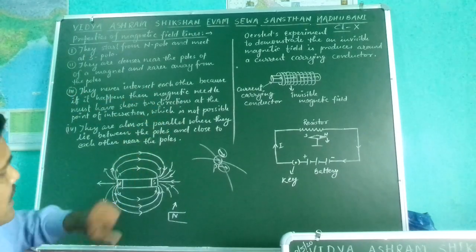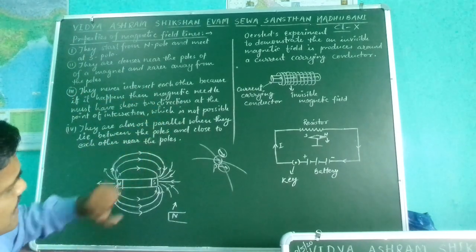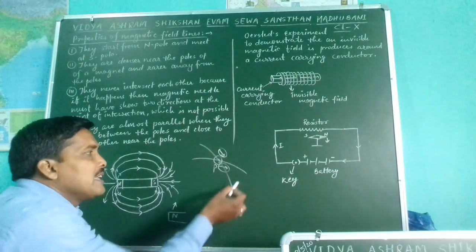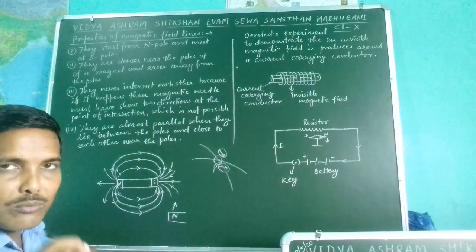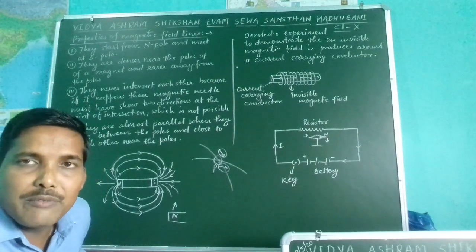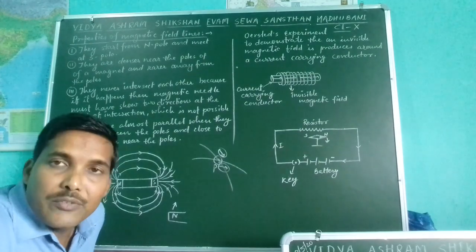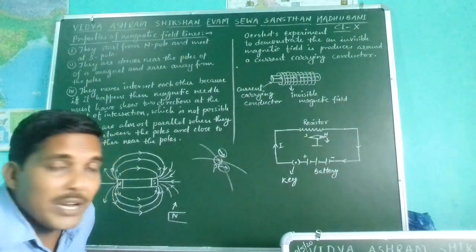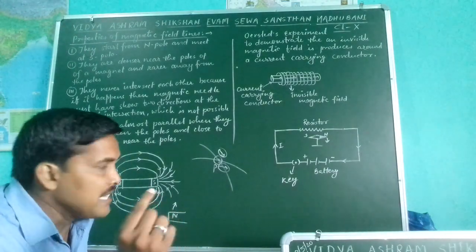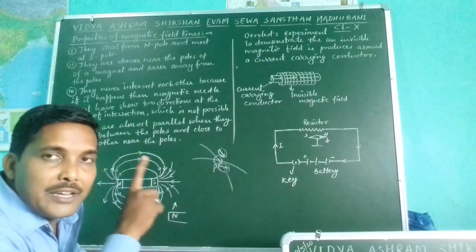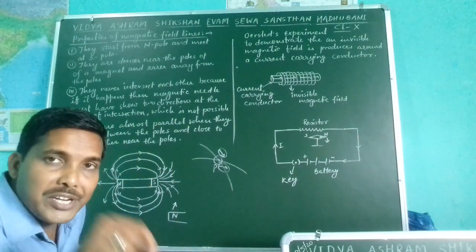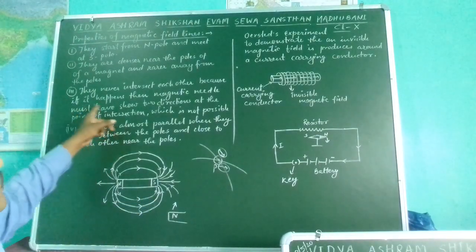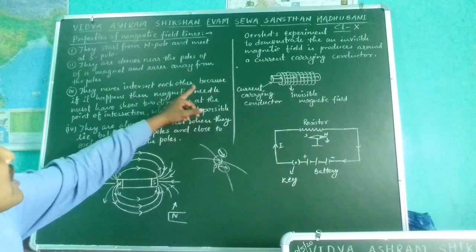The third feature is: they never intersect each other. If we assume that two magnetic field lines intersect at a point P, then when a magnetic needle is brought to point P, it must show two directions simultaneously, which is never possible. That is why magnetic field lines never intersect each other — because at the point of intersection, the needle would have to point in two directions at once.